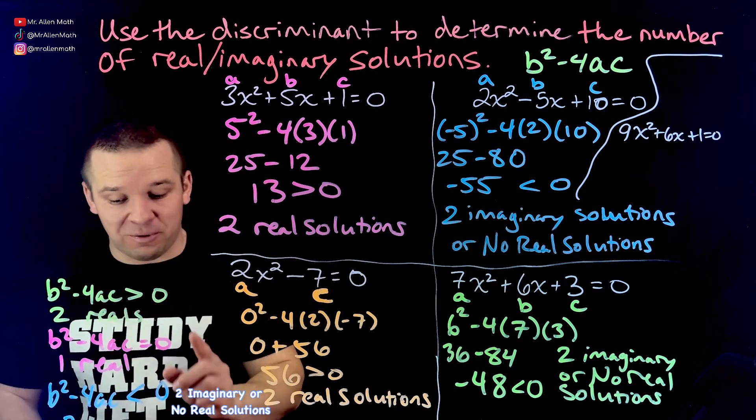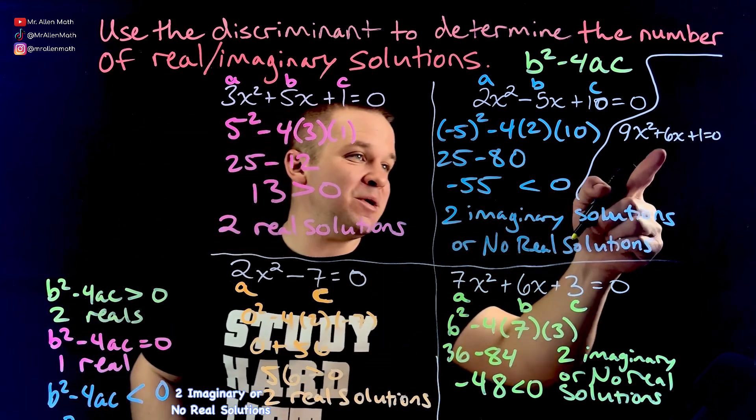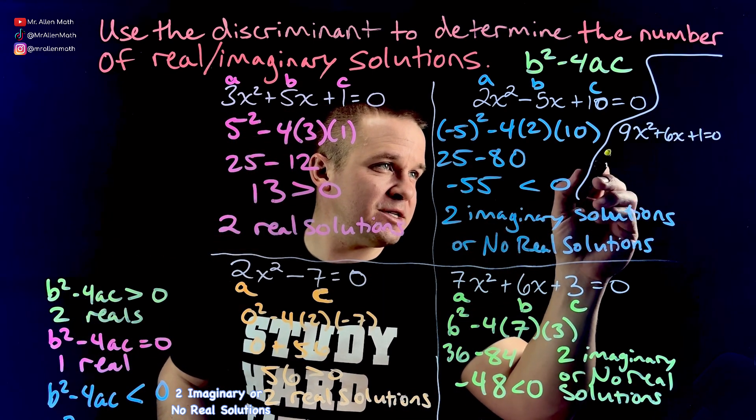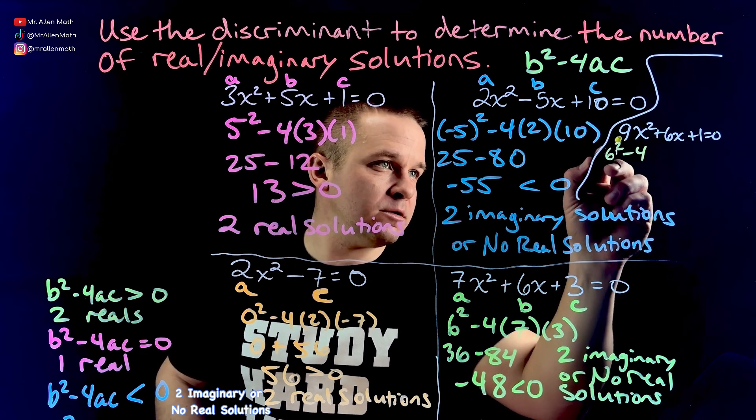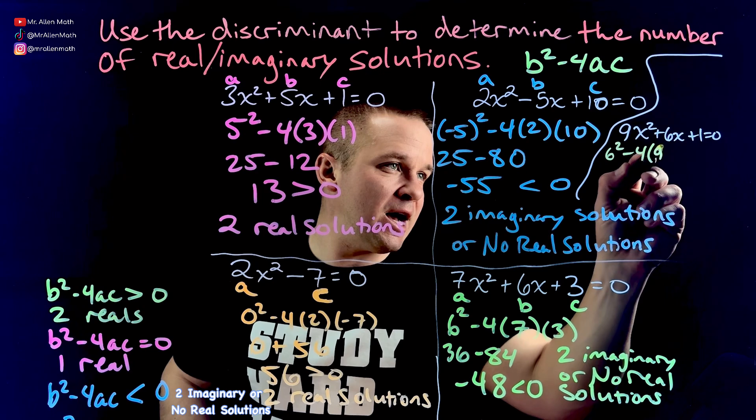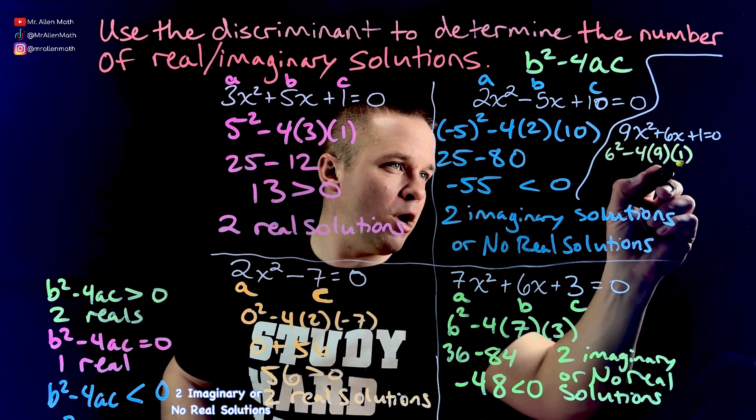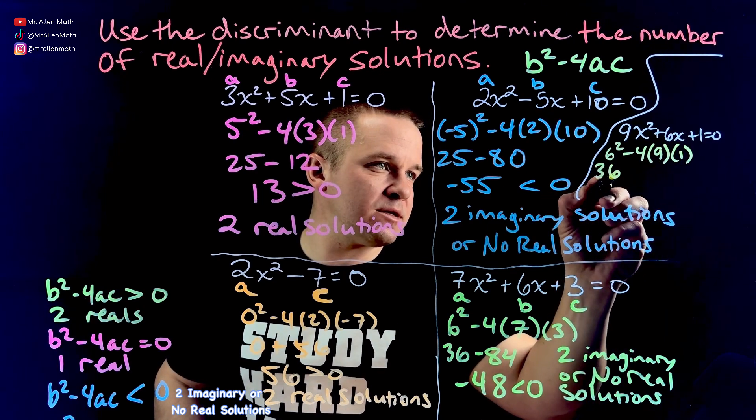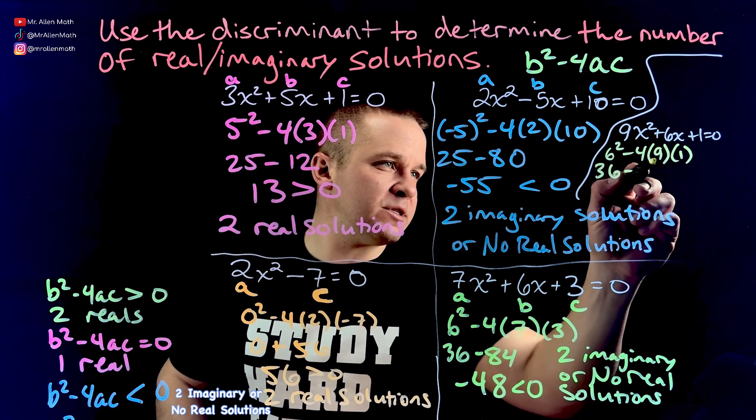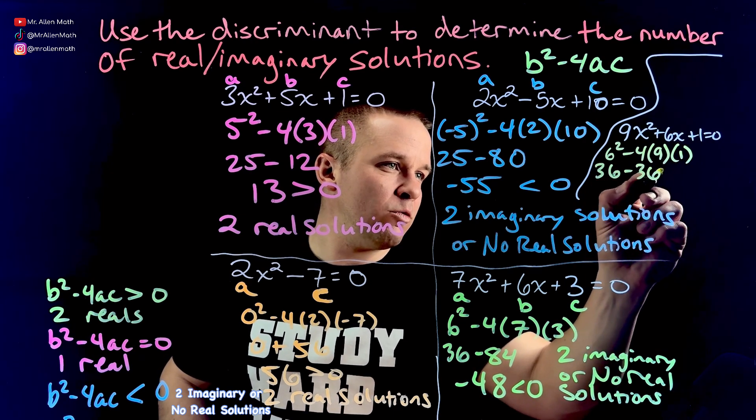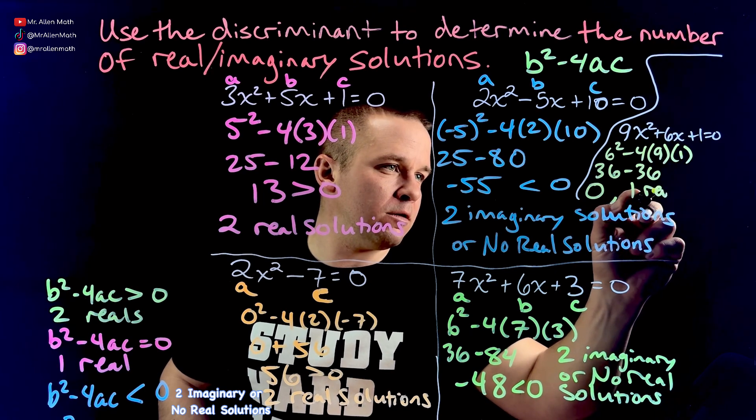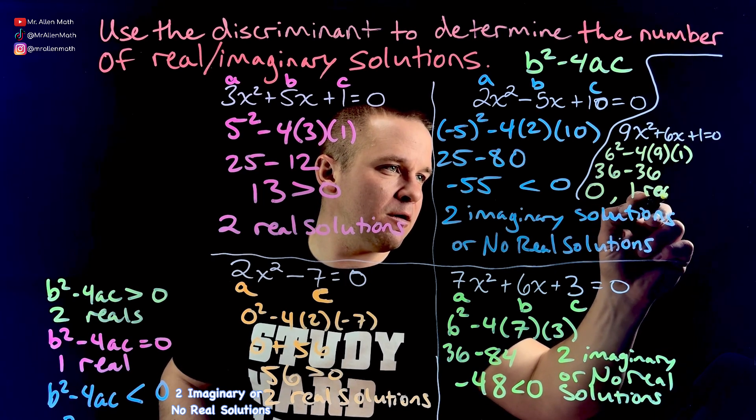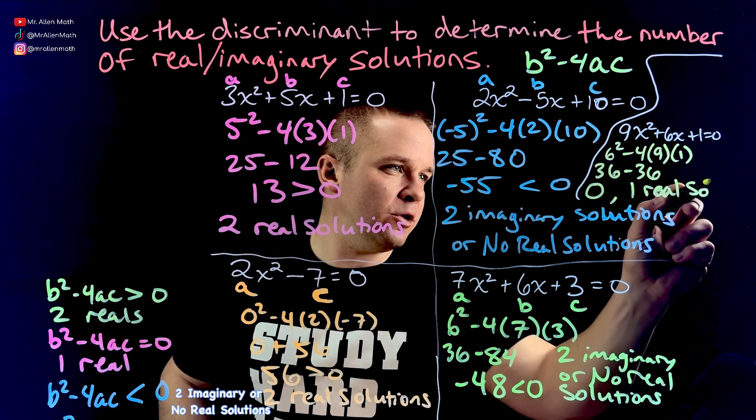So now when I plug this in, my discriminant, right? B squared is 36, sorry, 6 squared, minus 4 times A, which is 9 times C, which is 1. I'm going to get 36 minus 4 times 9 times 1. That's 36, which equals zero. So we have one real. I can't combine E at real solution. Boom.